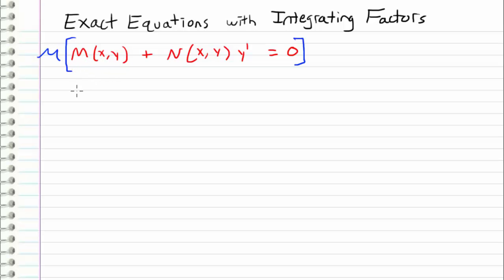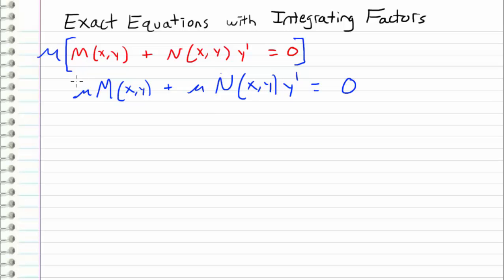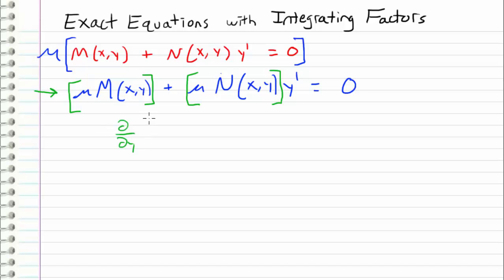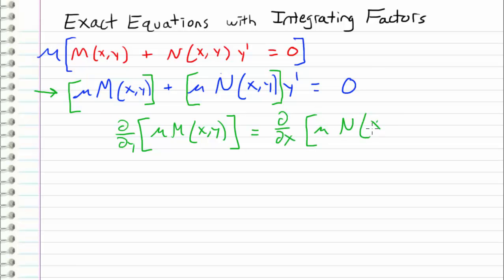So when I multiply through by μ, what I get is μ·M(x,y) + μ·N(x,y)·y' = 0. In order for this equation to satisfy the exact criteria, we want the partial derivative with respect to y of μ·M(x,y) to equal the partial derivative with respect to x of μ·N(x,y).